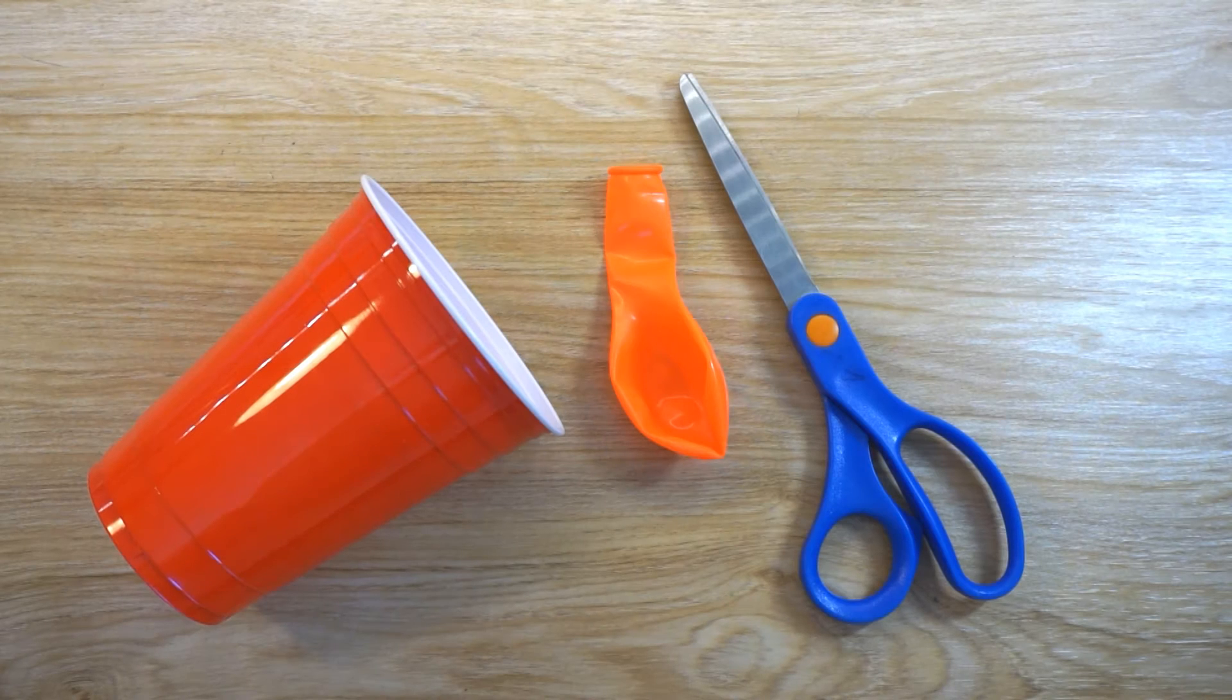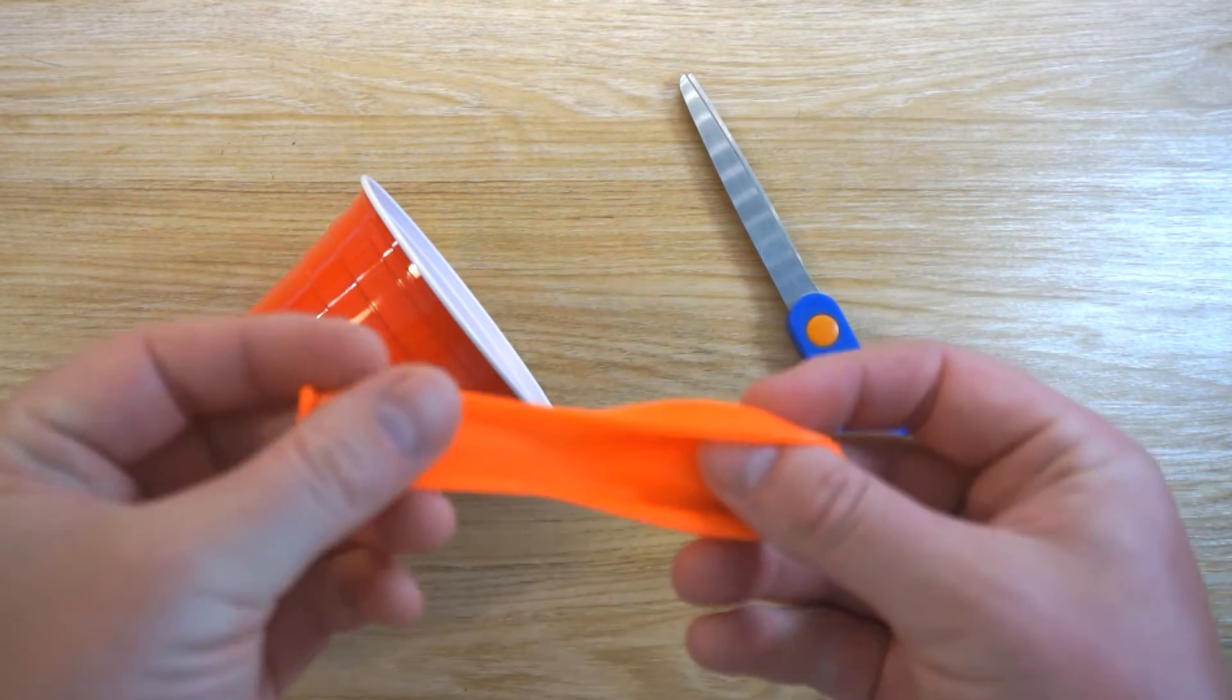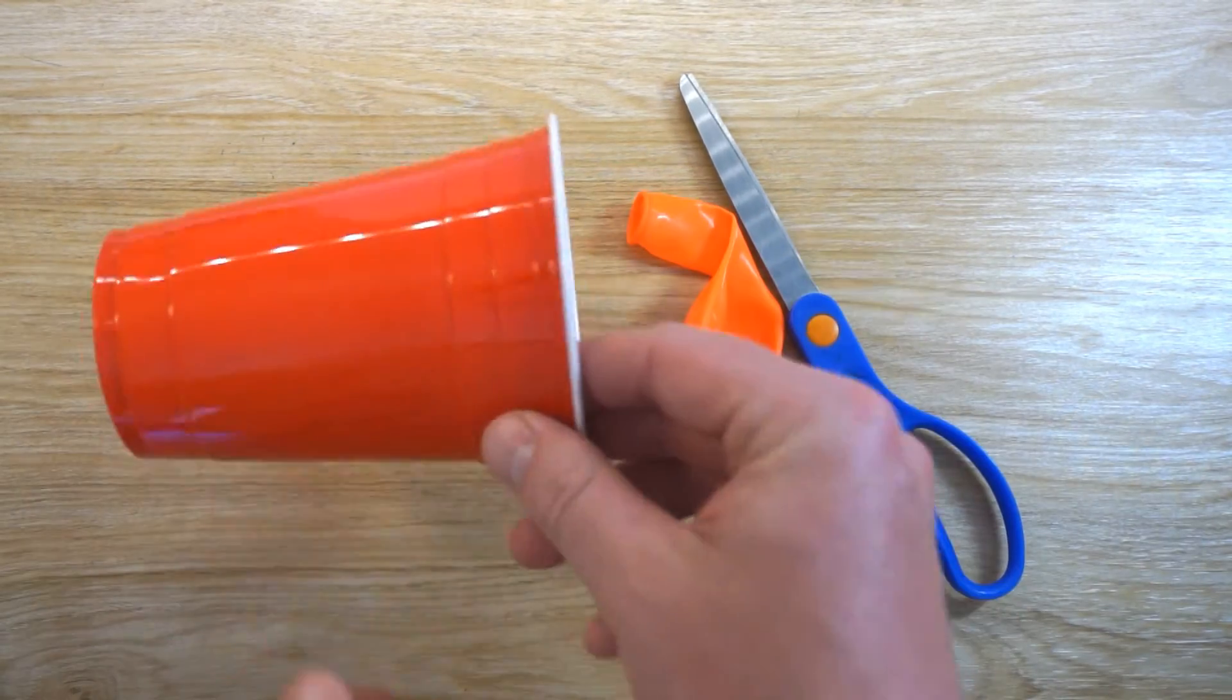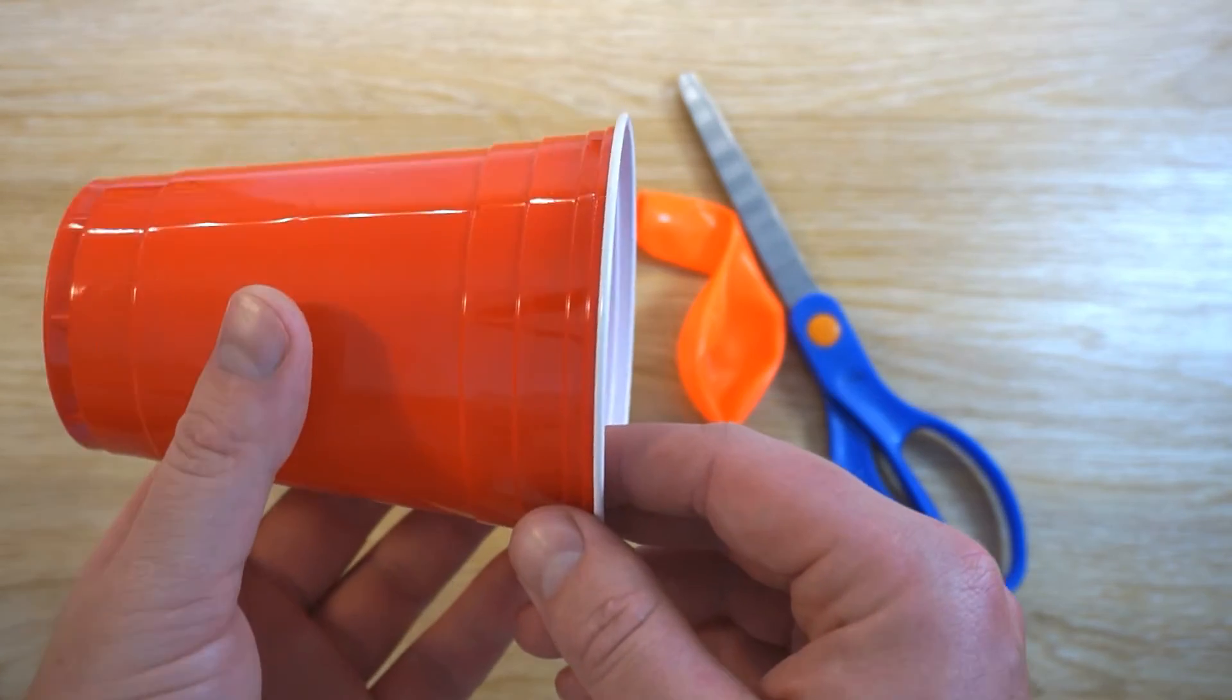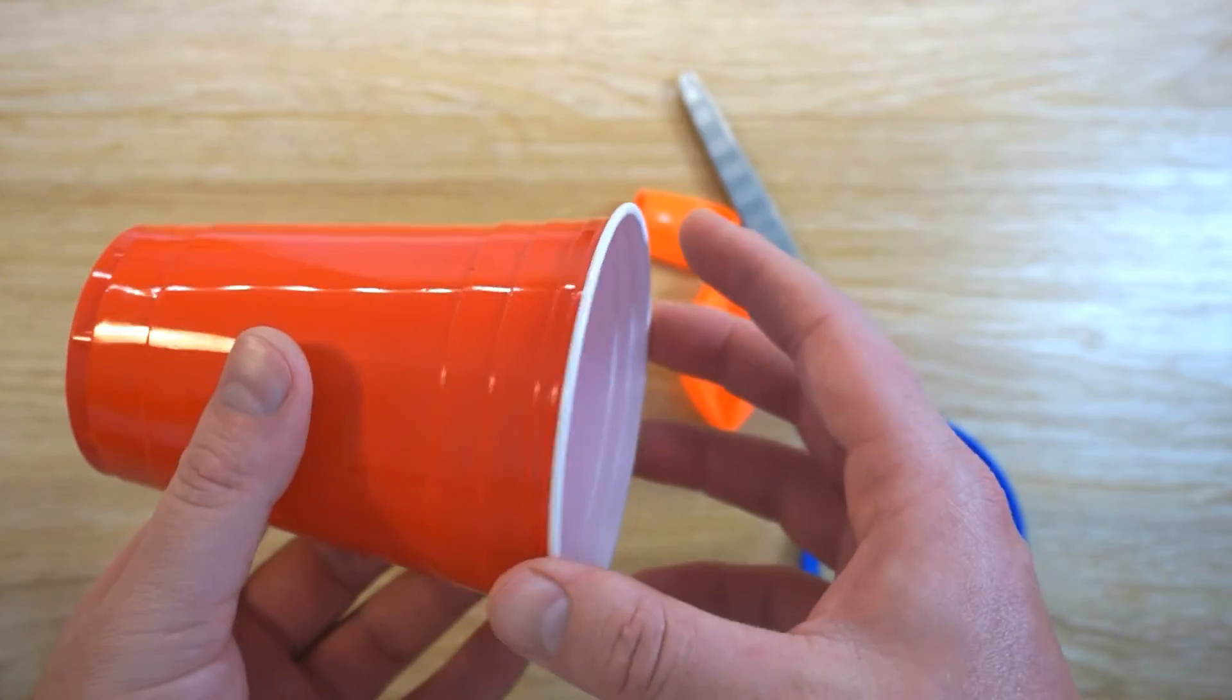All right, to make one of these what you need is some scissors, a balloon - I would recommend having a few of these - and a plastic cup. We call these solo cups because they're a bit bigger than your normal cup.